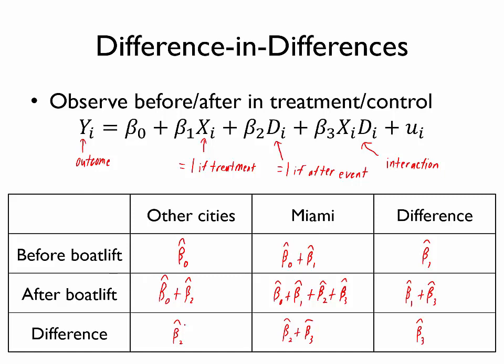And so if we're willing to assume that without the boat lift, Miami would have had changes in wages comparable to the changes we observed in other cities, then that would leave this β̂₃, this difference-in-differences, to reflect just the causal impact of this influx of immigrants.